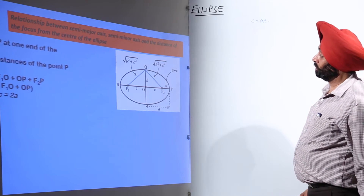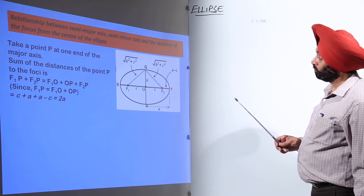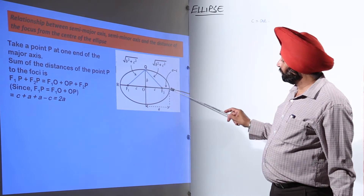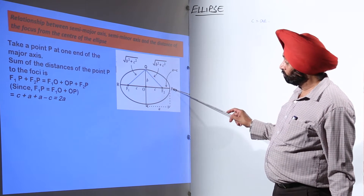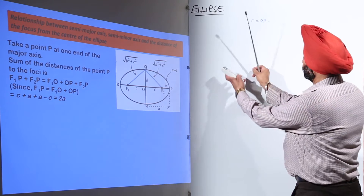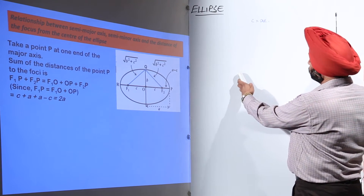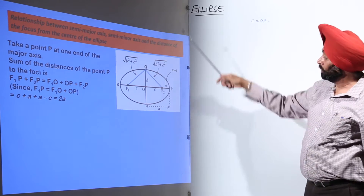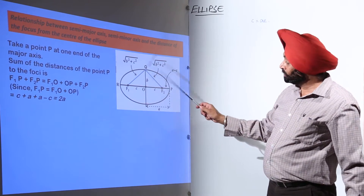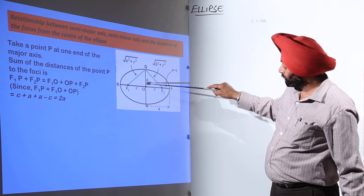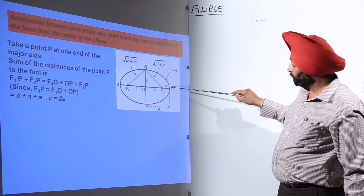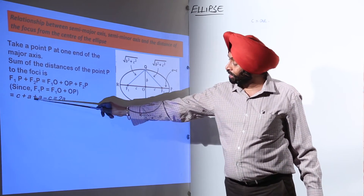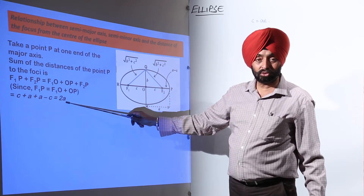Now take a point P at one end of the major axis. The sum of the distances of point P to the foci is F1P plus F2P. If you remember, with the thread, from one focus passing through the other focus — so it means F1P plus F2P is equal to F1O plus OP, which gives us C plus A plus A minus C, and that becomes 2A. Is it clear?